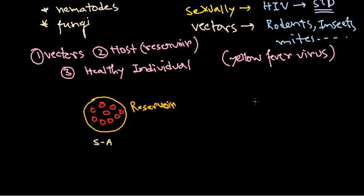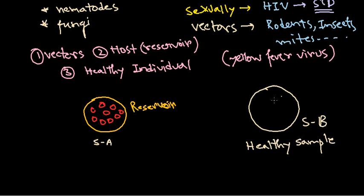And definitely they require a healthy individual. This is a healthy sample, a healthy specimen. We call it specimen B. It is healthy, free of any viruses, free of any infection. Now this is the situation. We have one reservoir carrying the viruses and we have another individual which is healthy.